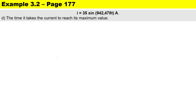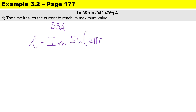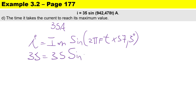The maximum value is 35 amps. Using the equation i equals im times sine of (942.478 × t × 57.3), when the instantaneous value equals the maximum value, we substitute 35 for i and 35 for im. This gives us 35 equals 35 times sine of (942.478 × t × 57.3).